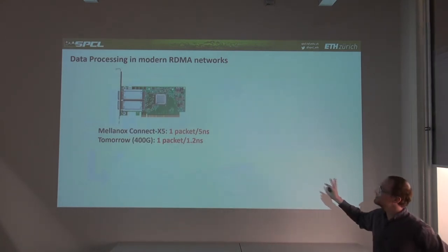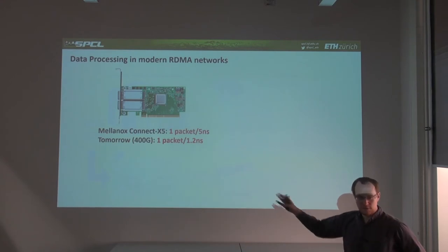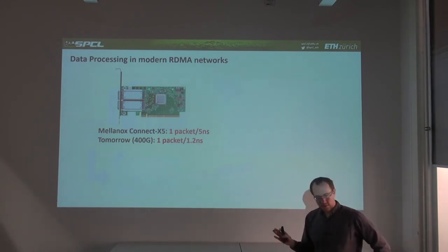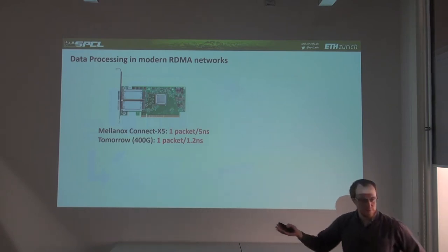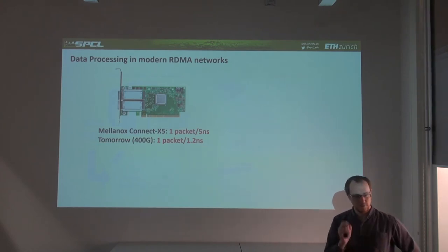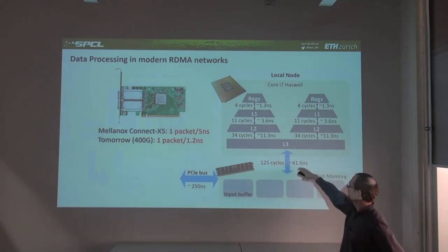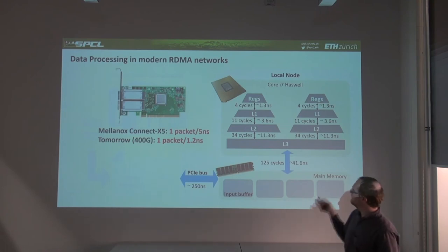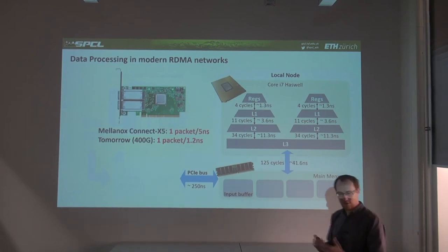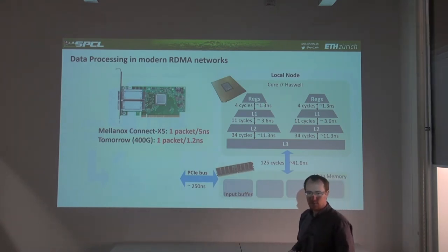With a Mellanox ConnectX-5 InfiniBand card — available today for around $500–$700 — you get one packet every 5 nanoseconds. Looking at future 400G technology, you'll have one packet every 1.2 nanoseconds. But looking at CPU complex latencies: 250 nanoseconds to go through PCIe, at least 40 nanoseconds from DRAM to chip, with further on-chip latencies. There's a clear mismatch — packets spend quite a while going through the overall system. The system is not optimized for very high-throughput packet processing due to its deep memory hierarchy.